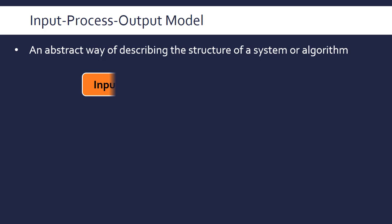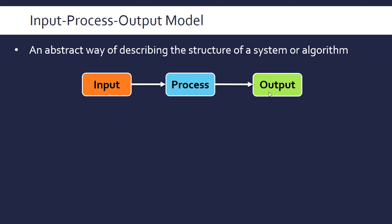There are three basic components of it, no prize for forgetting what they are. You have the input aspect of your process and then you have the output, so they're connected in this order.